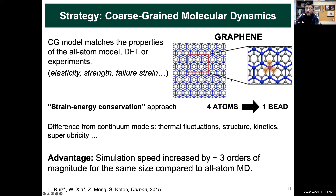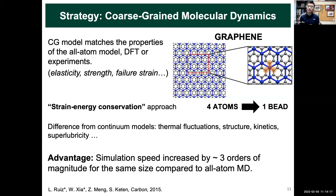The main advantage of this modeling tool is that we can increase simulation speed by roughly three orders of magnitude compared to the atomistic system. The same size simulation that takes one hour with the coarse-grained model would take about one year with the atomistic simulation.